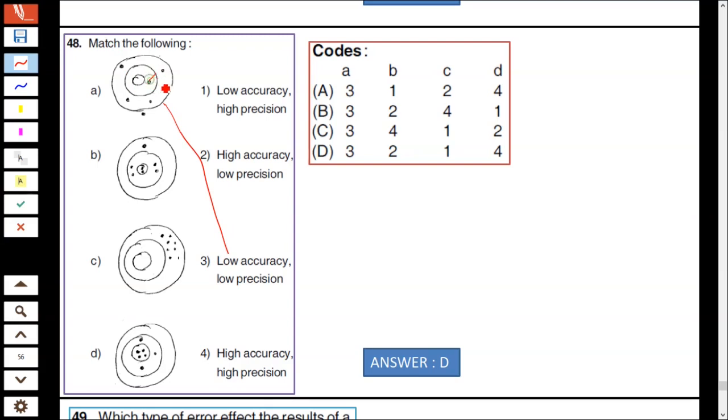Match the following: A is low accuracy, low precision. In the circle there is only one dot, accuracy is less and precision is less. B is high accuracy but low precision, there are four dots, accuracy is greater but precision is less. C is low accuracy, high precision. There are no dots in the center, so accuracy is very low but precision is greater. D is high accuracy, high precision. Hence option D is correct.